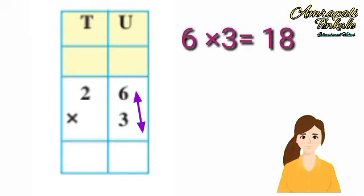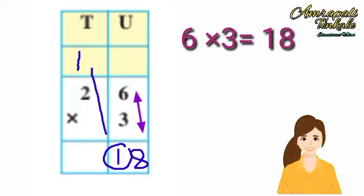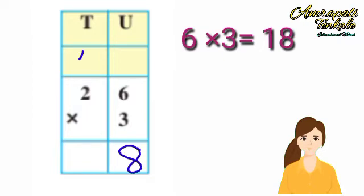First multiply the 6 in the unit's place by 3. 3 sixes are 18. From these 18 units, we take 10 units to make one 10. We write these 10 at the top in the 10th place.